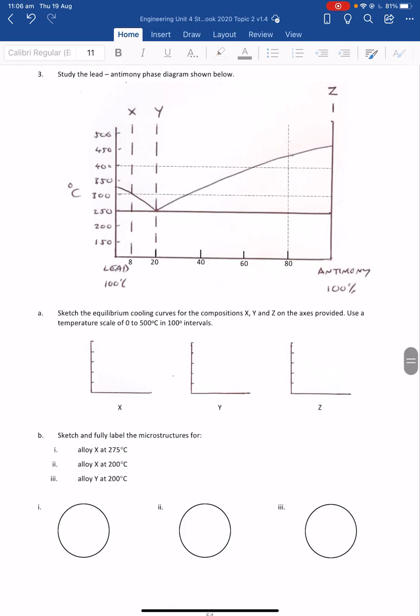The first part of this question asks us to draw the cooling curves for these different compositions at Z, X, and Y. If we go back to what we understand about cooling curves, we understand that if it's a solid metal, the cooling curve has a very simple shape, and that is what we have over here in part Z.